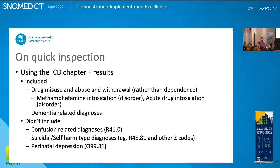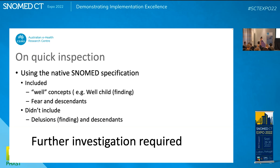Having a quick inspection of the ICD F chapter, it did include additional things like drug misuse, abuse, and withdrawal rather than just dependence — which was what I had kept my scope to — as well as methamphetamine intoxication and active drug intoxication. It also included dementia-related diagnoses. What it didn't include was confusion-related diagnoses, suicidal and self-harm type diagnoses, and things like perinatal depression, which are classified into other areas of ICD. Looking at the SNOMED ECL results, it did include a lot of 'well' concepts like 'well-child,' 'feeling fine,' and there was quite a lot of that data — also the fear concept and its descendants. My query didn't include delusions findings and their descendants, so obviously a lot more investigation is needed.